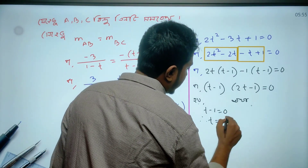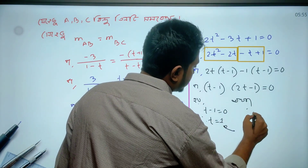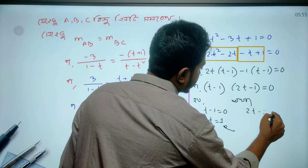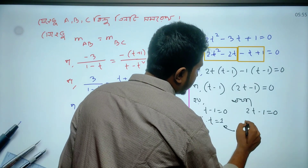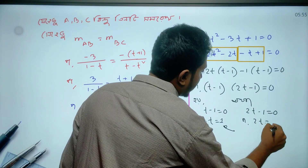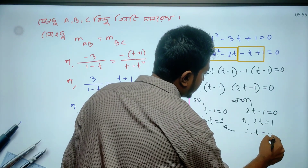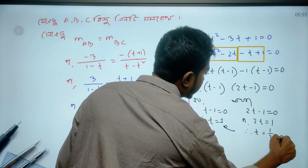2-t — two equals to one, among equals to one by two.